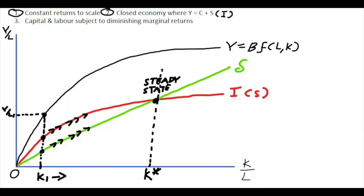And this is associated with an output level, and an output level per worker as well, which we see over here on the left, and we'll put that in as Y over L, and we'll call that star. So that is a steady state rate from which there is no tendency to change.